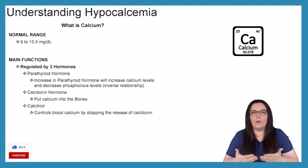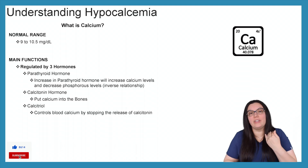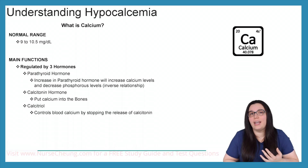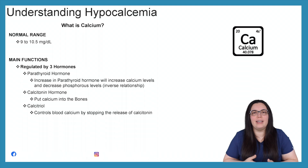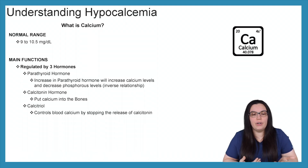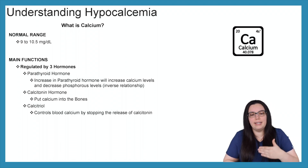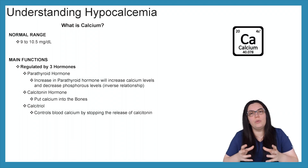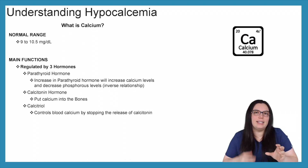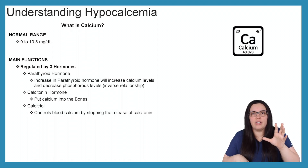In order to understand what happens with our electrolyte imbalances, we really have to understand what the electrolyte is. Starting with calcium: the normal range is between 9 to 10.5 milligrams per deciliter. The main function of calcium is it helps regulate three hormones found within our body. The first is our parathyroid hormone. An increase in parathyroid hormone will cause an increase in serum calcium levels and a decrease in phosphorus levels. Calcium and phosphorus really have an inverse relationship — when one goes up, the other goes down and vice versa.